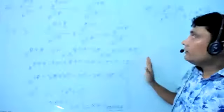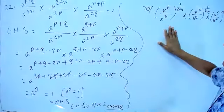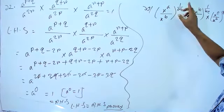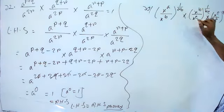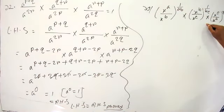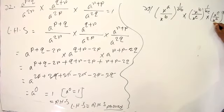Let's see the next question about three numbers: (a^b/a^c)^(1/a) × (a^c/a^a)^(1/b) × (a^a/a^b)^(1/c).